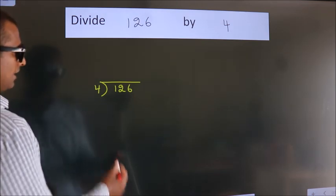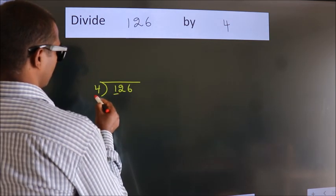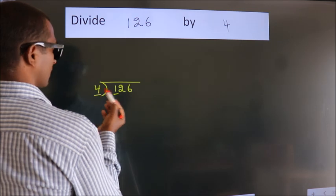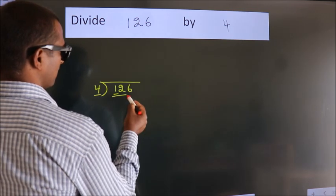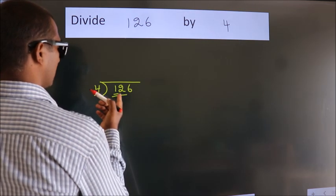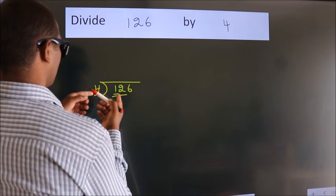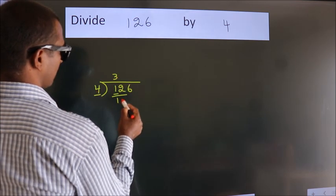Next. Here we have 1, here 4. 1 is smaller than 4, so we should take 2 numbers: 12. When do we get 12 in the 4 table? 4 threes is 12.